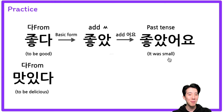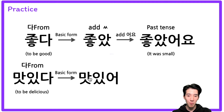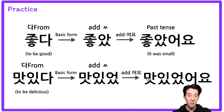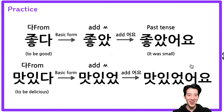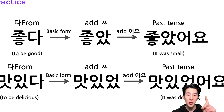It was good. Next one: 맛있다. The basic form is 맛있어. So I'm going to add 받침 and add 어요 — it becomes 맛있었어요. 맛있었어요 — past tense. It was delicious.